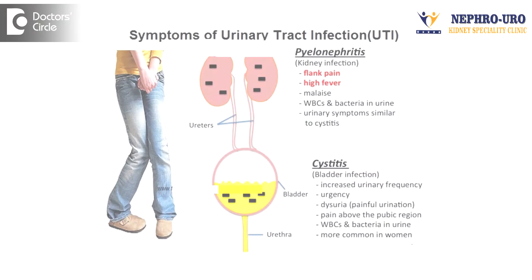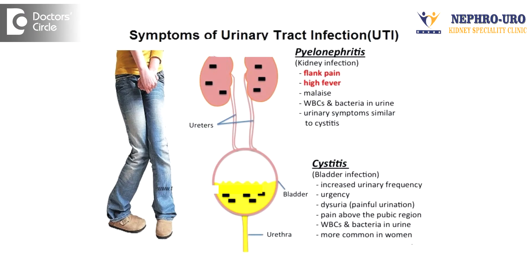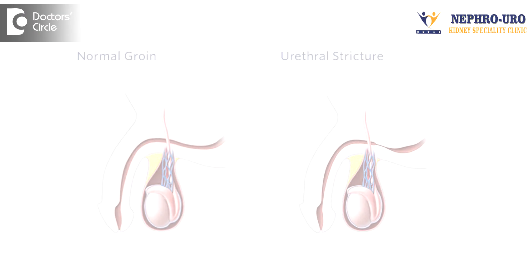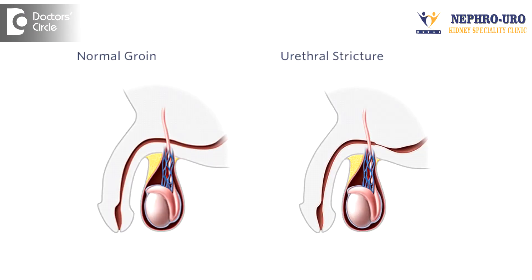Genital pain with dysuria means the patient has got urinary tract infection, stricture, or an obstruction in the lower urinary tract. The patient should be evaluated for this and then treated.